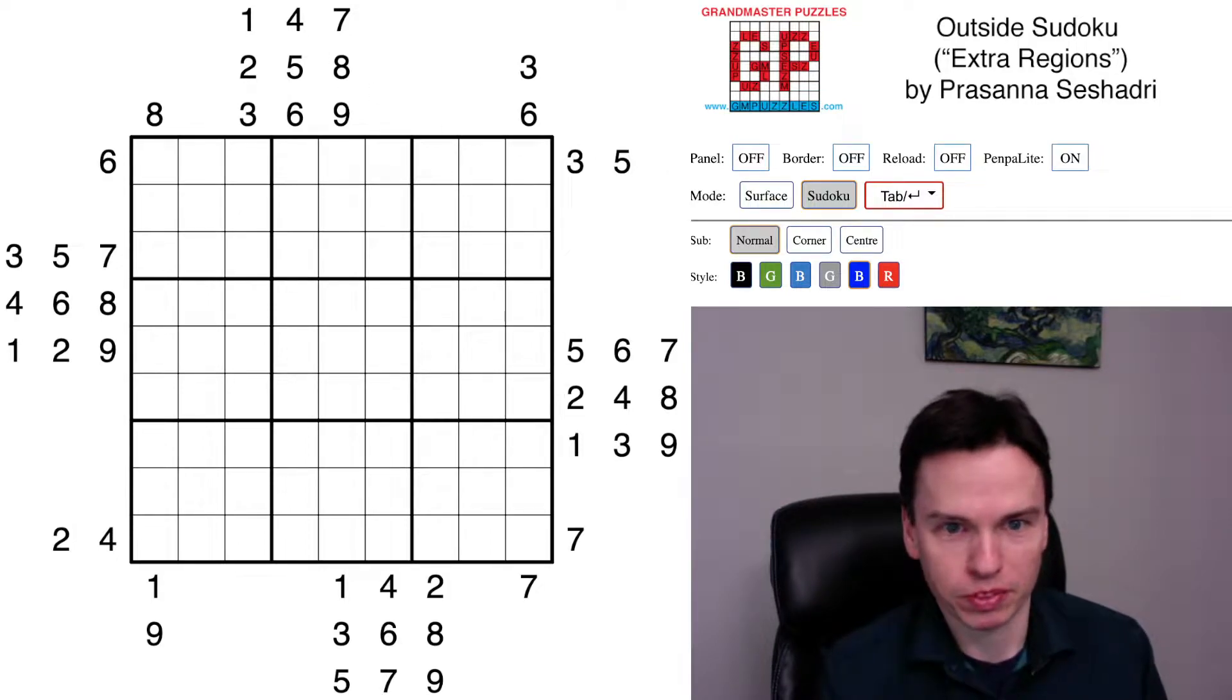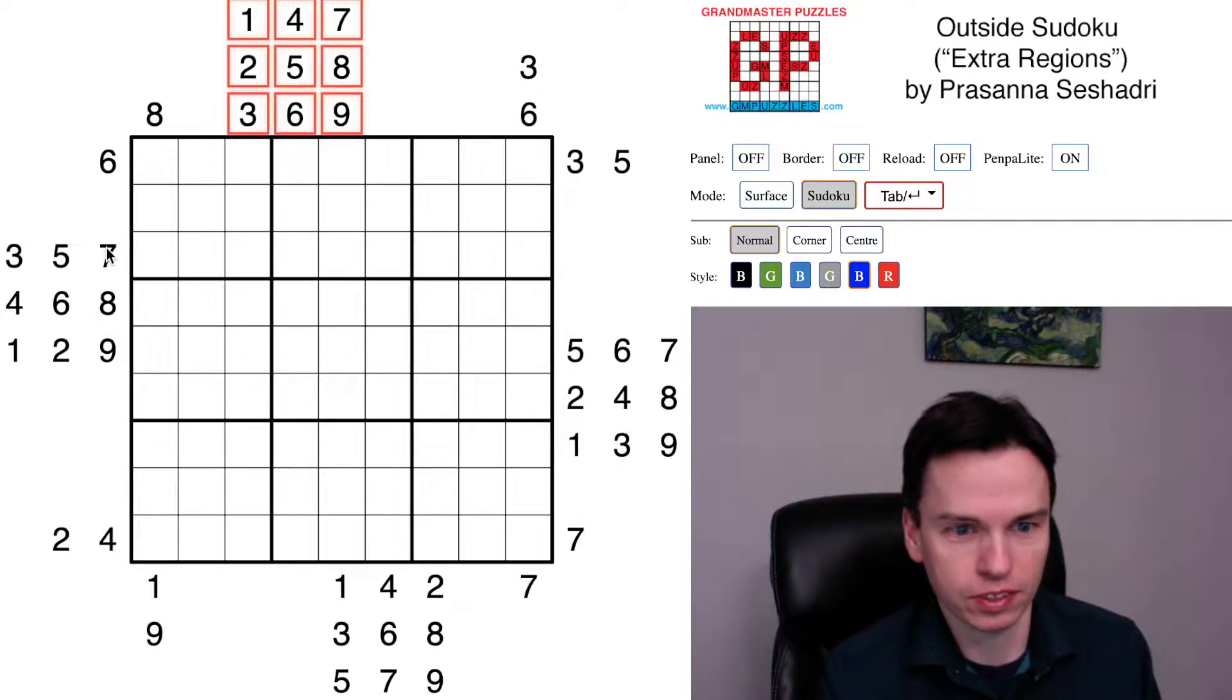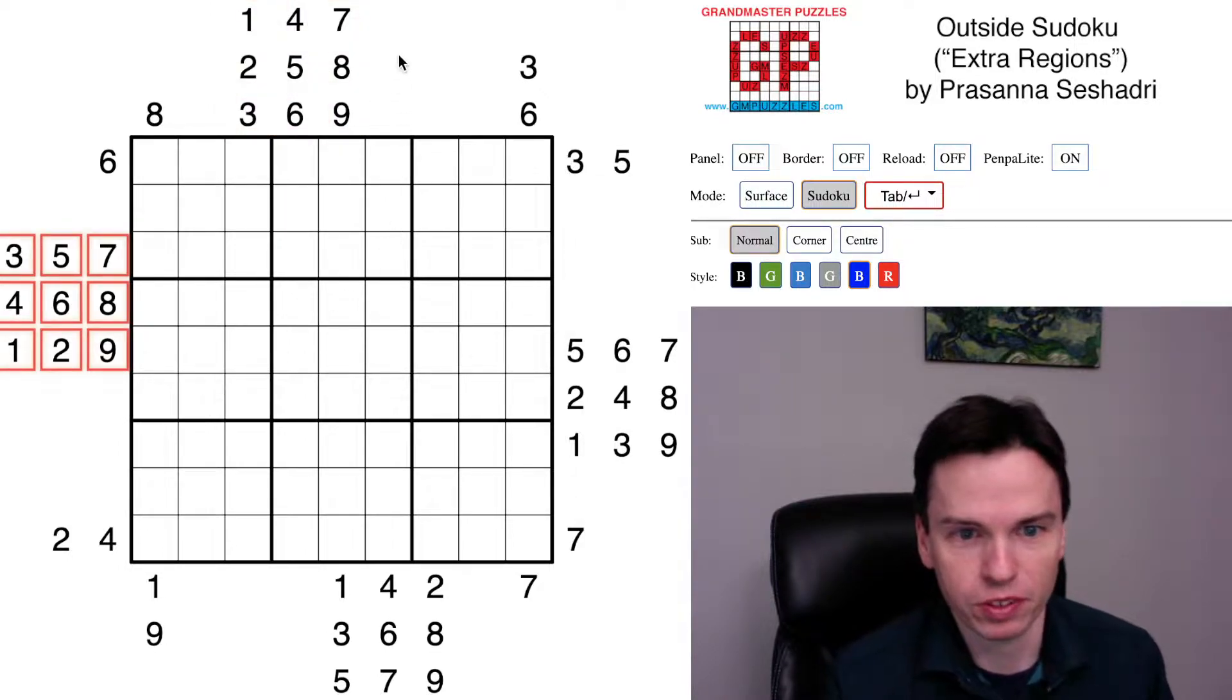So here's all this Outside Sudoku by Prasanna Seshadri which has this extra region constraint which looks like these four 3x3 boxes where digits 1 through 9.